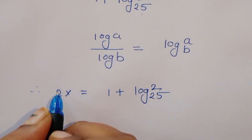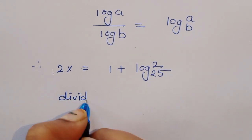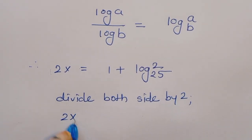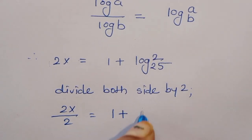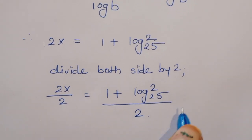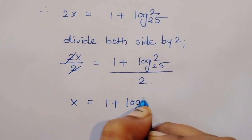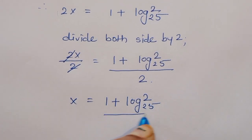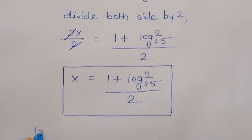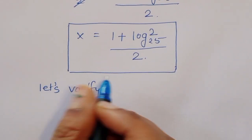Now we have to remove the 2, so we divide both sides by 2. We get 2x divided by 2 is equal to 1 plus log of 2 to the base 25, all divided by 2. The 2 cancels on the left side, so x is equal to 1 plus log of 2 to the base 25, divided by 2. This is the value of x.